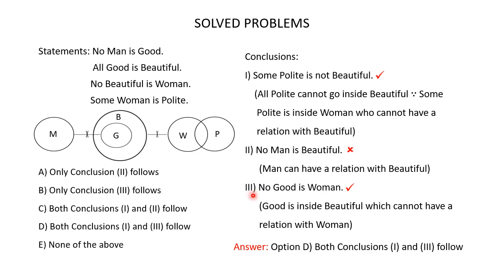Conclusion 3: No good is woman. Beautiful cannot have any relation with women, and since all good is inside beautiful, all good also cannot have any relation with women. All good cannot have a relation with women means no good is a woman — the conclusion no good is a woman is correct. Conclusion 3 follows. Conclusions 1 and 3 follow — the correct answer is option D.